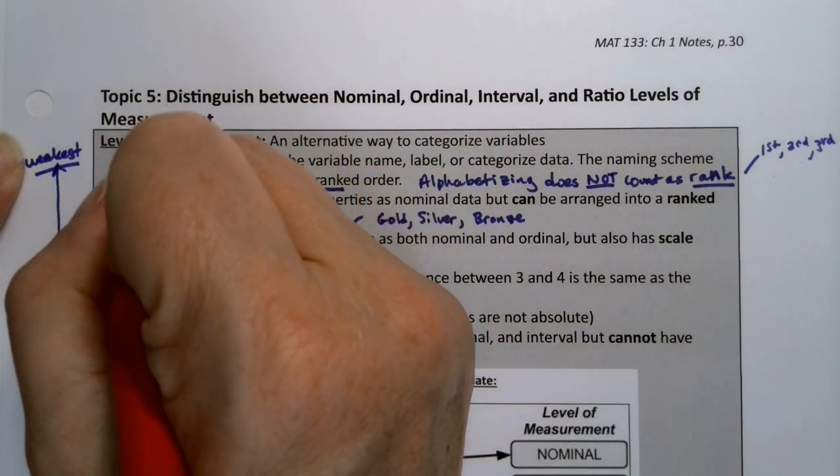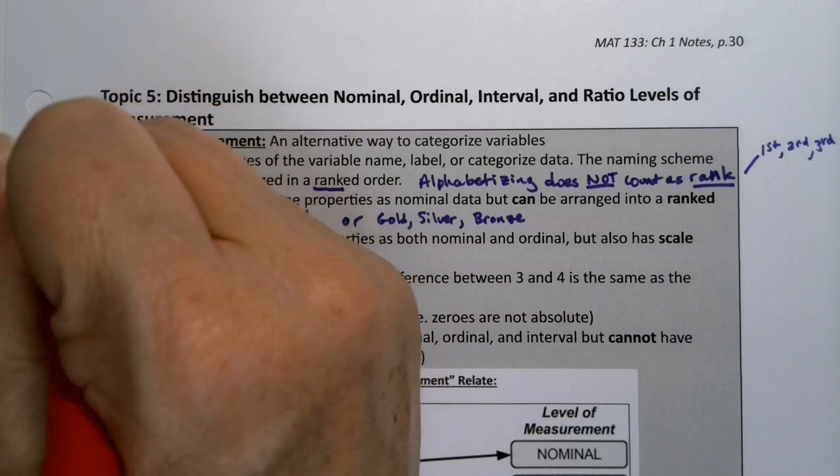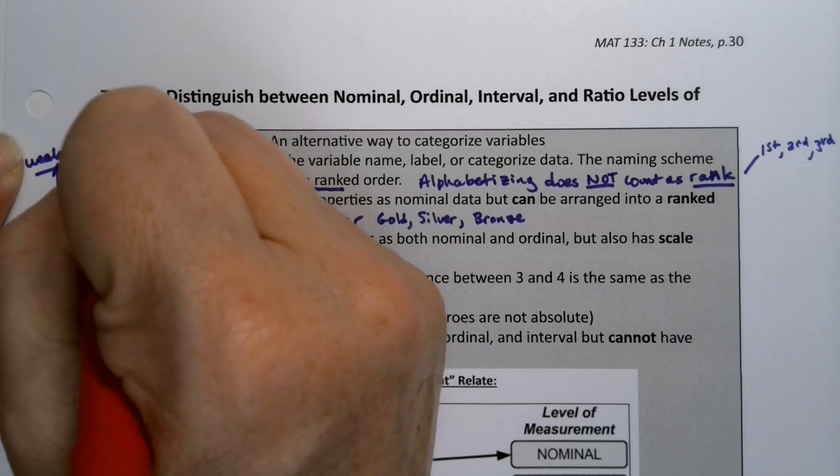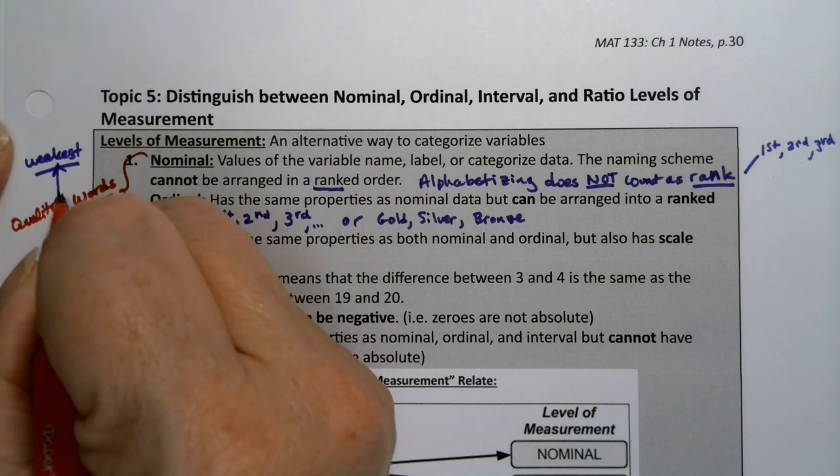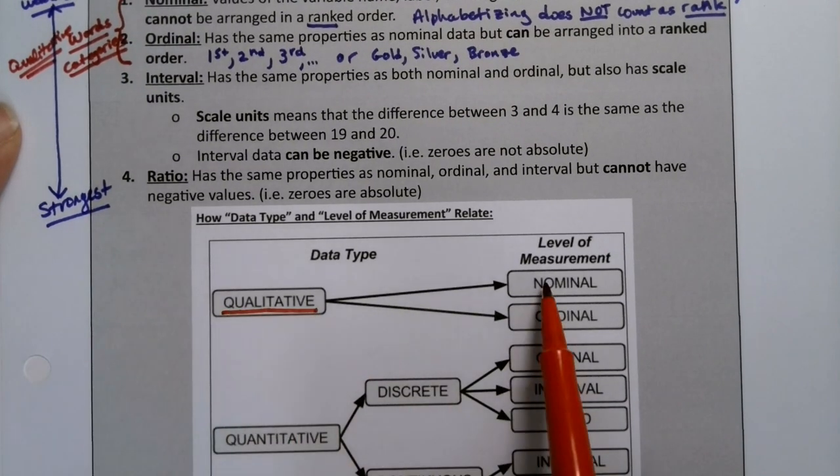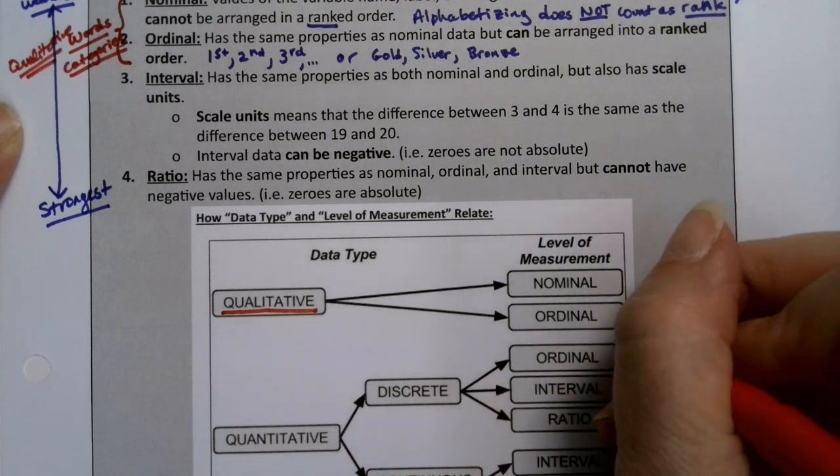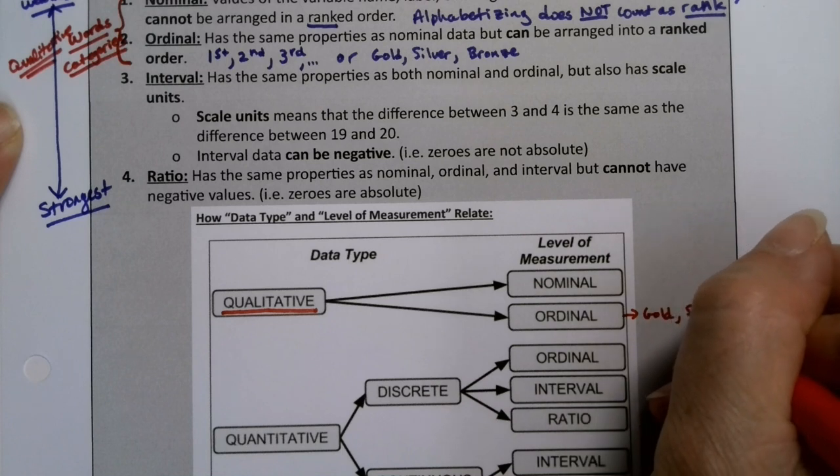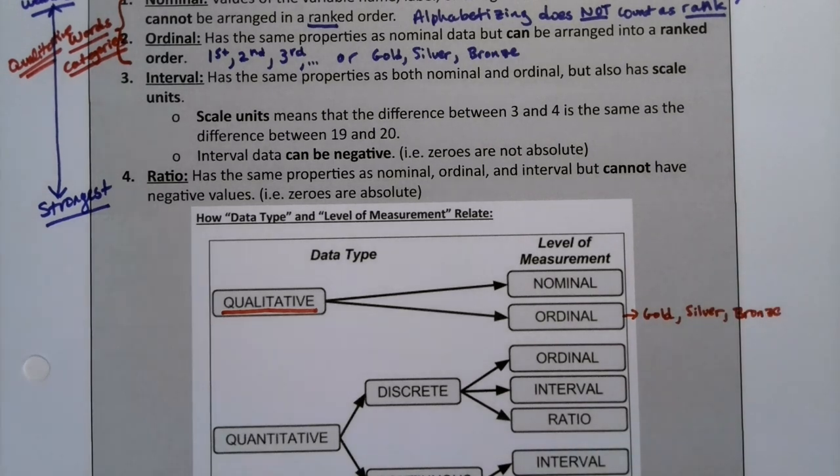Now, if you're comparing to qualitative, quantitative, these two are the qualitative. They tend to be words, categories. Qualitative breaks into nominal and ordinal. So if you're looking at words and categories, if they cannot be ranked, that's nominal. If they can be ranked, like gold, silver, bronze, that's ordinal. So this would be your gold, silver, bronze. That's ordinal.